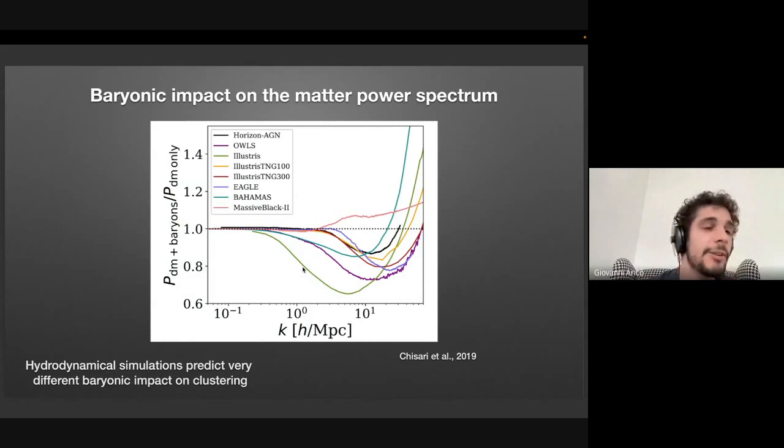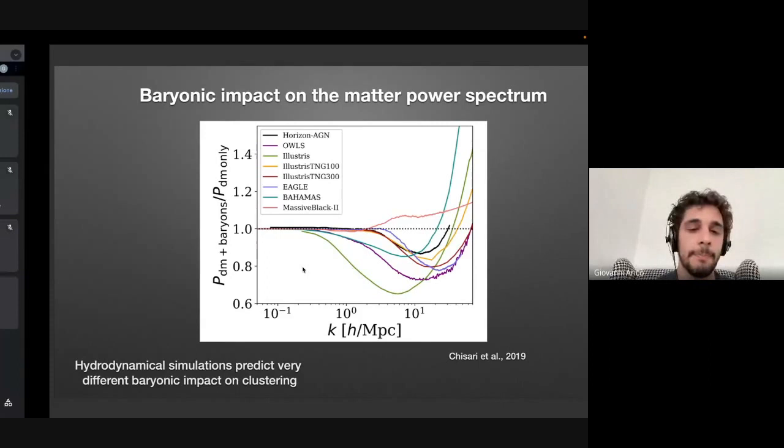So baryons, if we take the large scale structure of the universe, at very large scales gravity is dominant. So baryonic effects are negligible, but if we go to smaller scale, then the gas pressure...